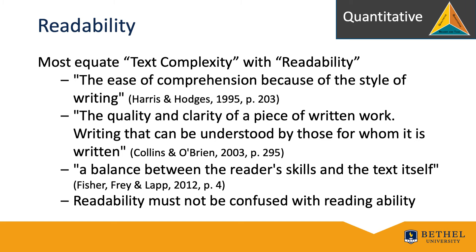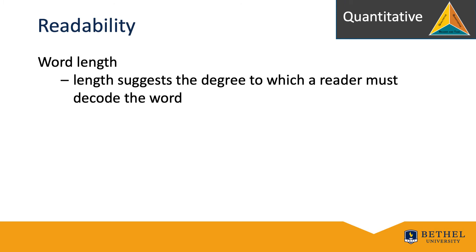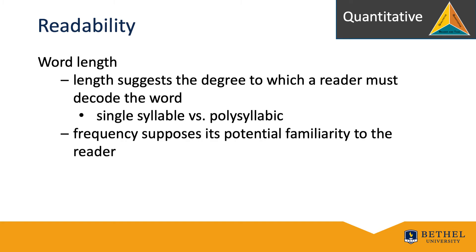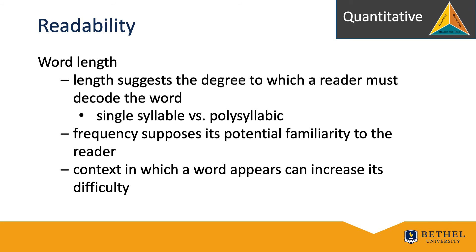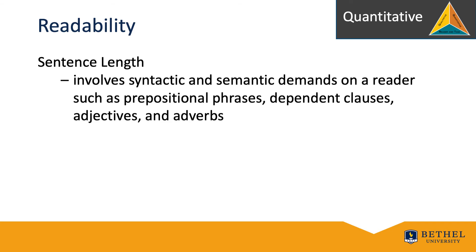One important aspect of determining quantitative readability is word length. Length suggests the degree to which a reader must decode the word — a single syllable versus a polysyllabic term. Frequency supposes its potential familiarity to the reader; the more often a word occurs, the more likely it will be simpler. Also, the context in which a word appears can increase its difficulty. Sentence length involves syntactic and semantic demands on a reader, such as prepositional phrases, dependent clauses, adjectives, and adverbs.